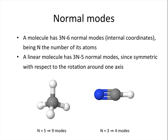In case of a linear molecule, one has 3n-5 normal modes, since this molecule is symmetric with respect to the rotation around one of the axes. This is, for example, the case of hydrogen cyanide,